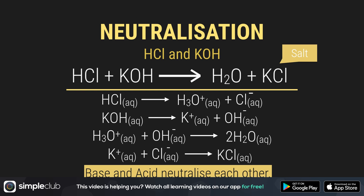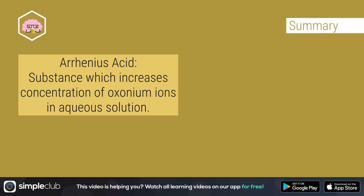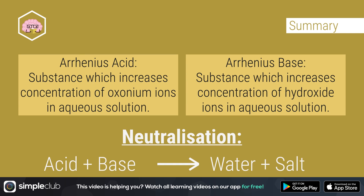Remember three things for Arrhenius: according to Arrhenius, an acid is a substance which increases the concentration of oxonium ions in an aqueous solution. On the other hand, bases increase the concentration of hydroxide ions. The acid and the base together neutralize each other to produce water and a salt. Well, that's it. See you later.